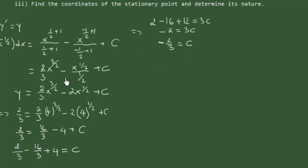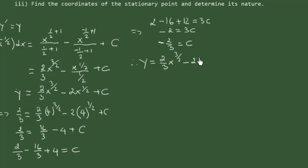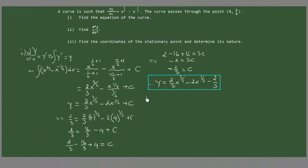Therefore, replacing C with its value, we can write the equation of our curve: y equals (2/3)x to the power of 3.5 minus 2x to the power of 1.5 minus 2/3.